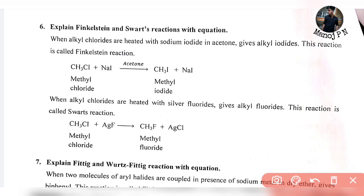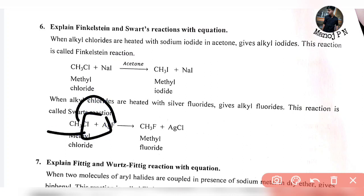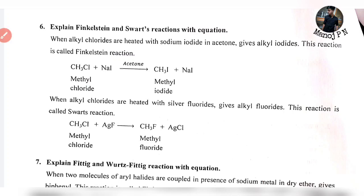Swartz reaction: in this case, using AgF. Alkyl chloride heated with silver fluoride gives CH₃F — methyl fluoride. And AgCl is separated as a byproduct. So that is the reaction: CH₃F and AgCl. Methyl fluoride. This is known as the Swartz reaction.